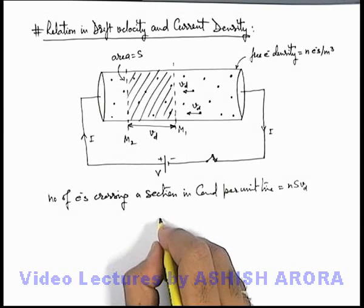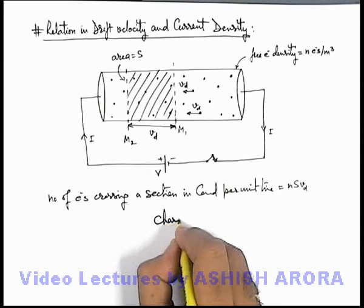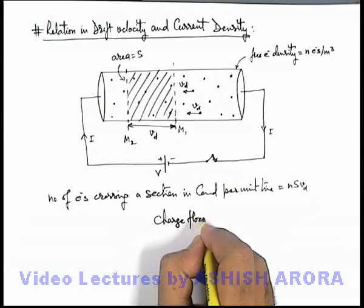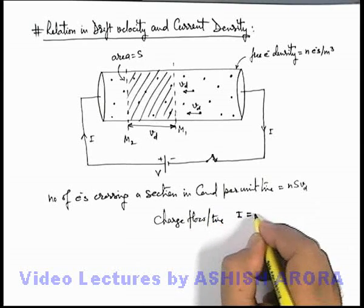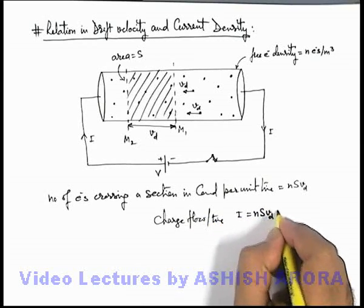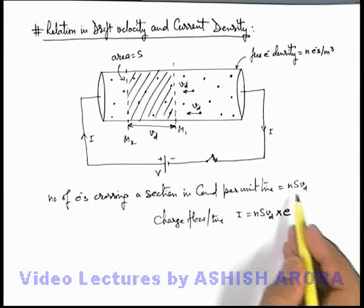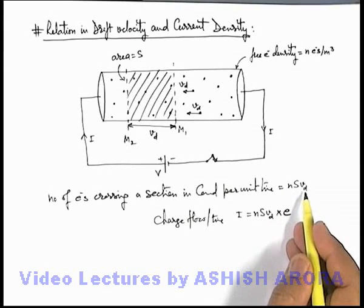And if we calculate the charge flow per unit time, that we can write as current. That will be n*S*vd multiplied by the charge of electron, because these many electrons are passing in 1 second.